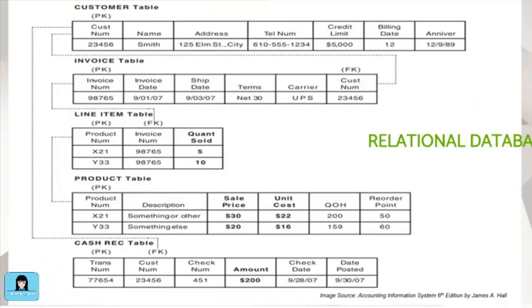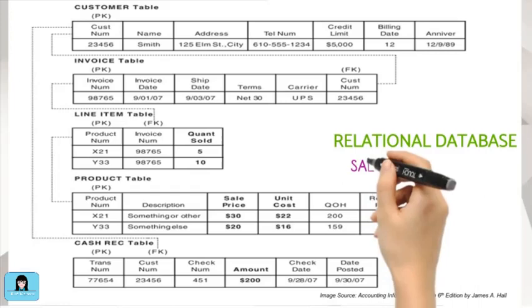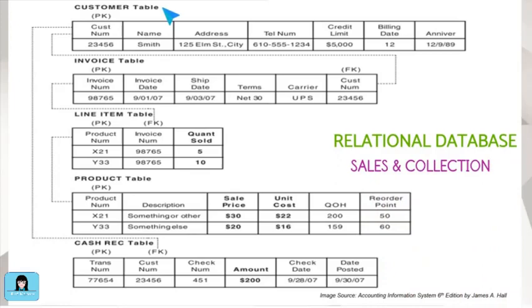A relational database is a collection of information that organizes data points with defined relationships for easy access. In a relational database, there are several tables, each with rows of data, and each table is related to another table. The diagram on the screen illustrates a relational database for sales and collection transactions, including a customer table, sales invoice table, inventory line item table, product table, and cash receipt table.